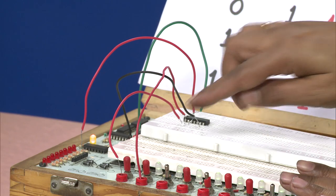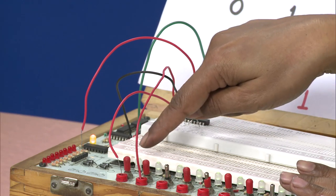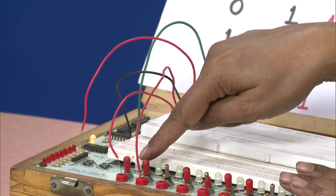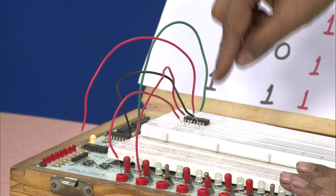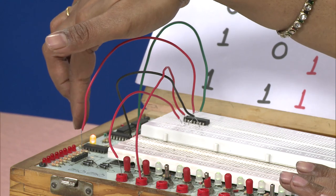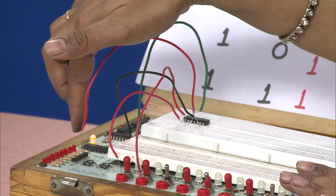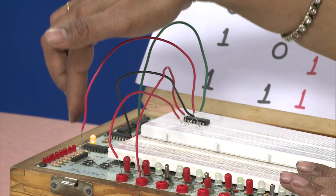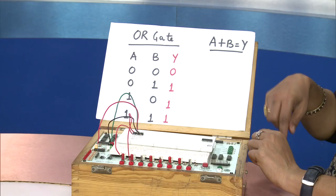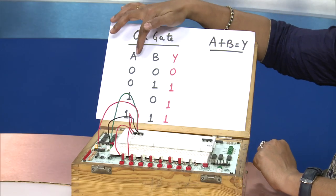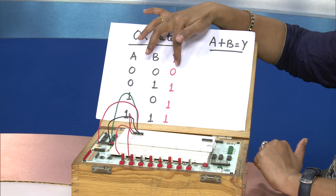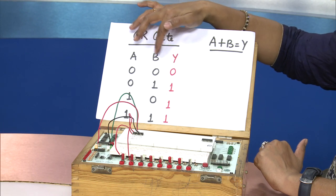To begin with, both A and B are 0. We can see that the LEDs are in the OFF state. When A is 0 and B is 0, the output is also 0. Let's have a look at the truth table. Here in the truth table when A is 0 and B is 0, the output is also 0 and that's what we have seen in the circuit.